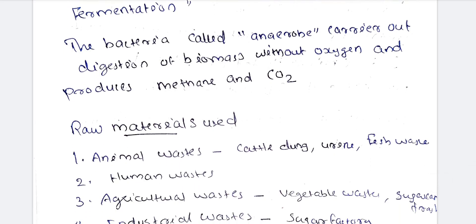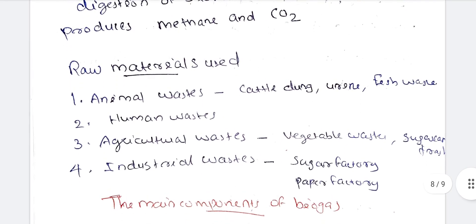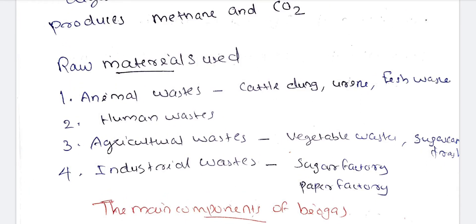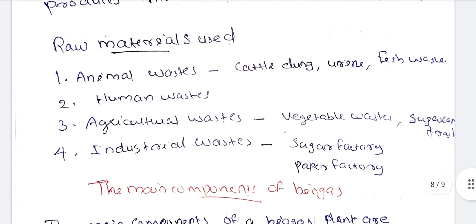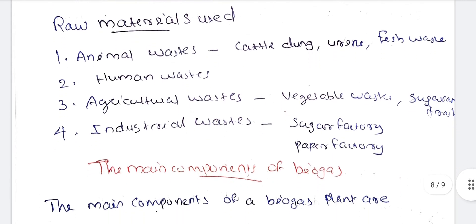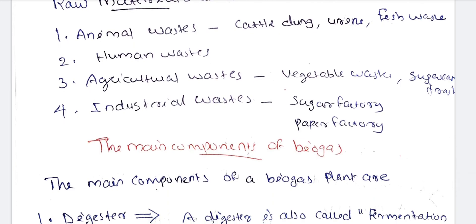Raw materials used in biogas plants include animal waste such as cattle, urine, and fish waste; human waste such as excretion and urine; agricultural waste such as vegetable waste, sugar cane trash; and industrial waste from sugar factories and paper factories.